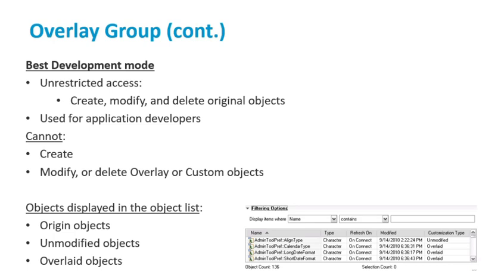The base development mode provides unrestricted access to create, modify and delete original objects such as out-of-the-box application objects. It is intended to be used only by application developers, so be aware of who you give this access to within the organization. This development mode cannot create, modify or delete overlay or custom objects. Objects visible in this mode include only origin objects or base objects, unmodified objects and overlaid objects. It is important to remember: do not create or modify objects in base development mode, since changes can be lost when BMC Remedy AR System applications and servers are upgraded. However, this is the mode needed if you need to modify an original object.